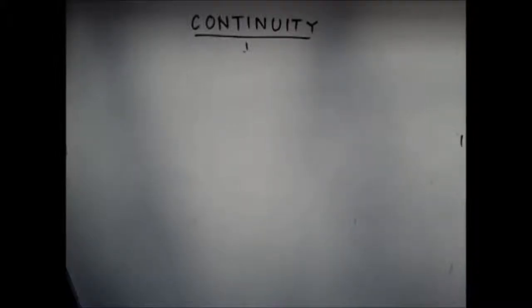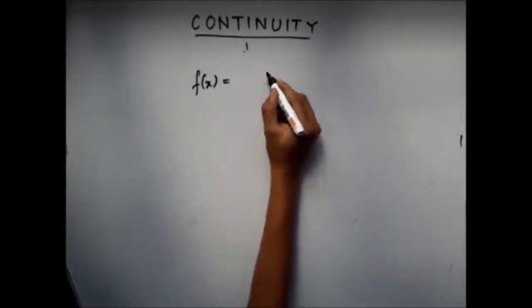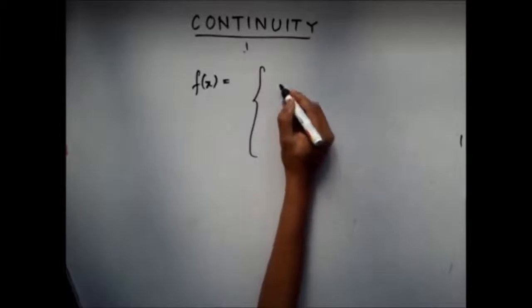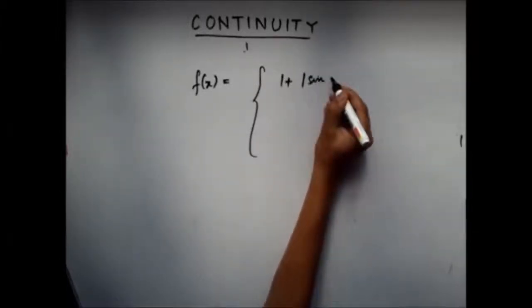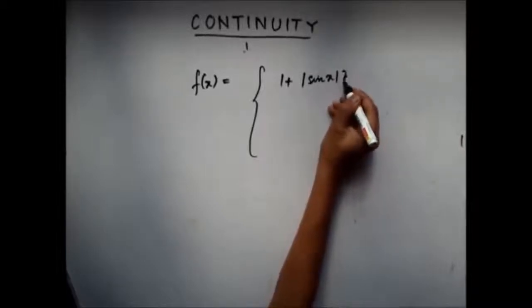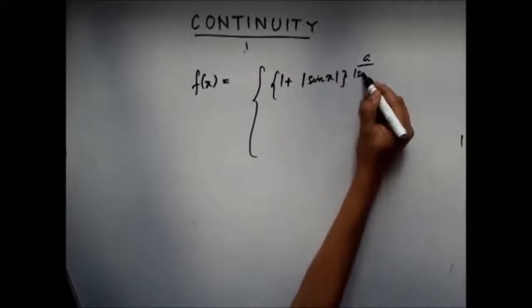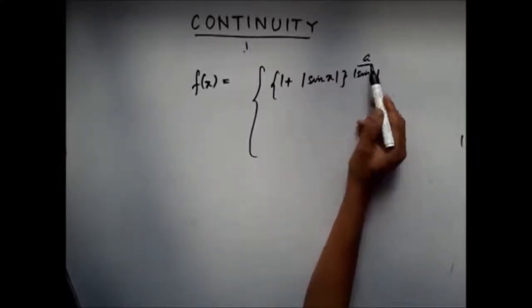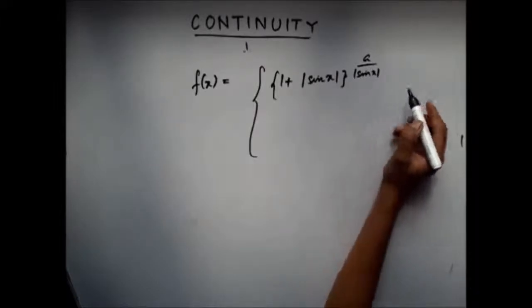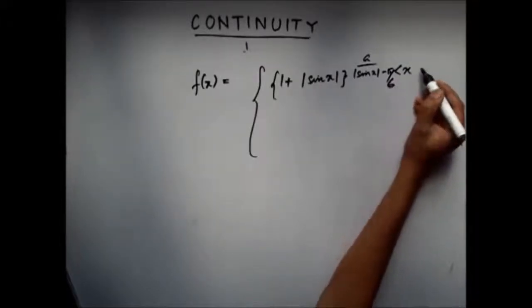The question is, f(x) is given by (1 + |sin x|^a) / |sin x| in the interval -π/6 to 0.